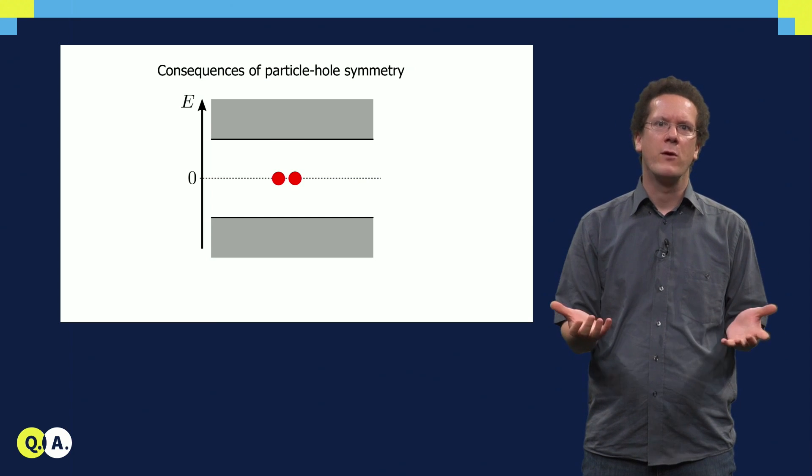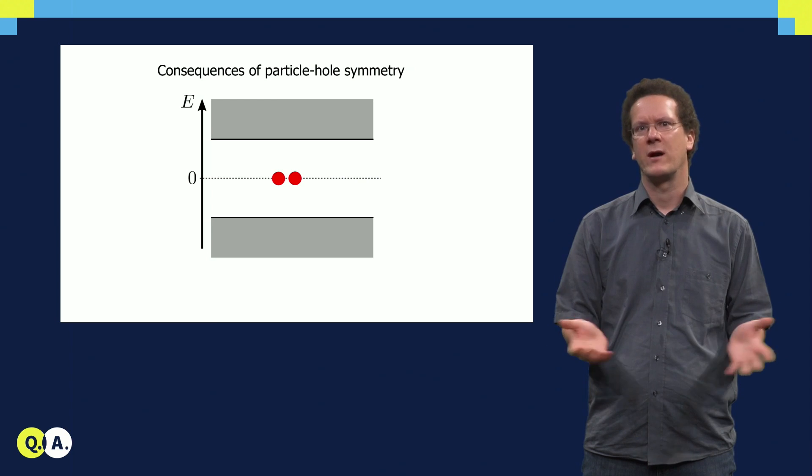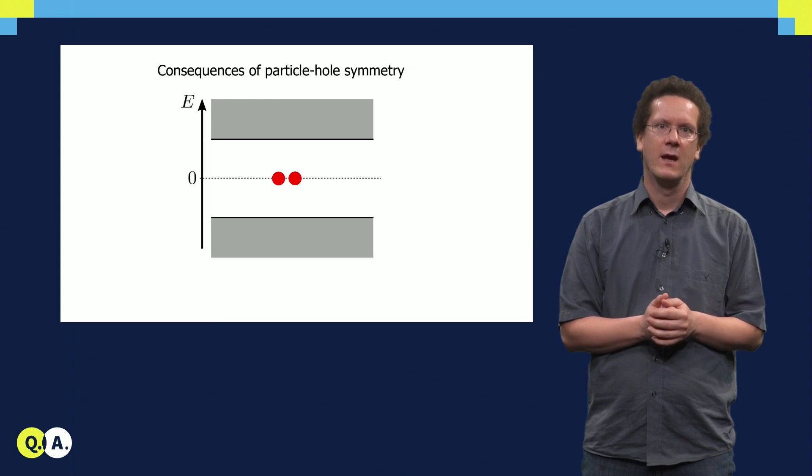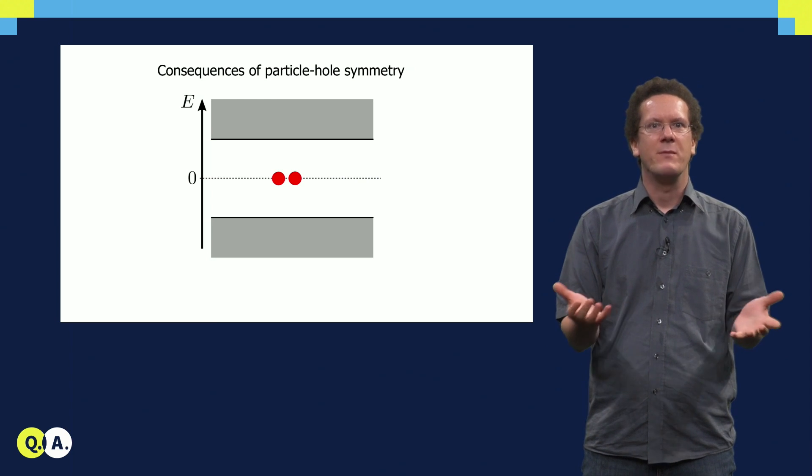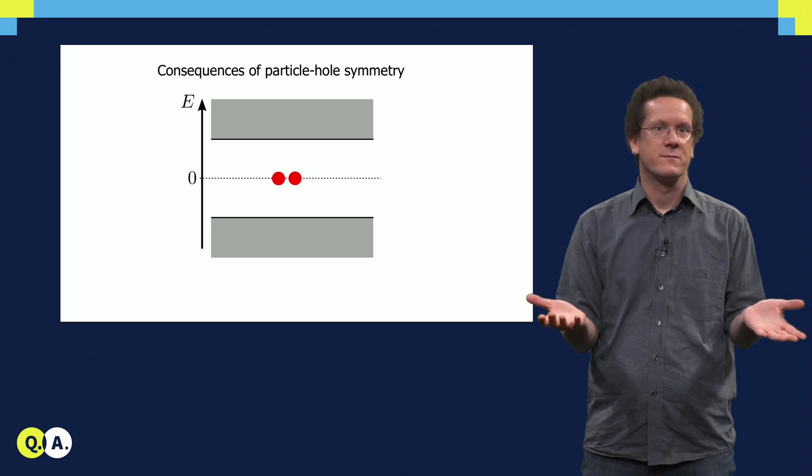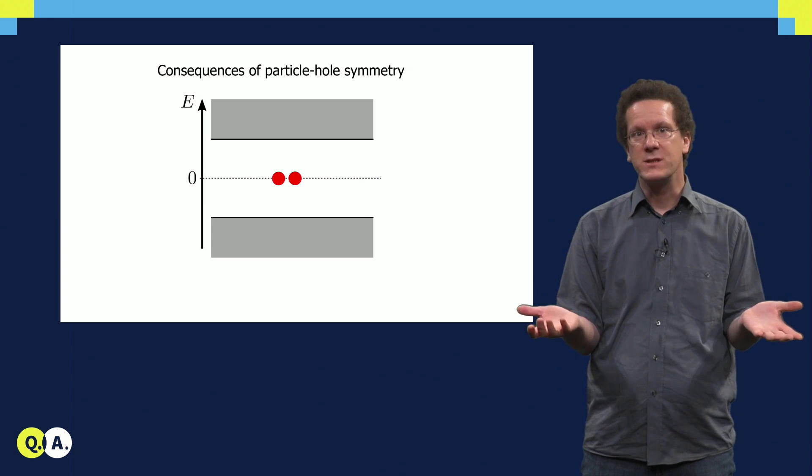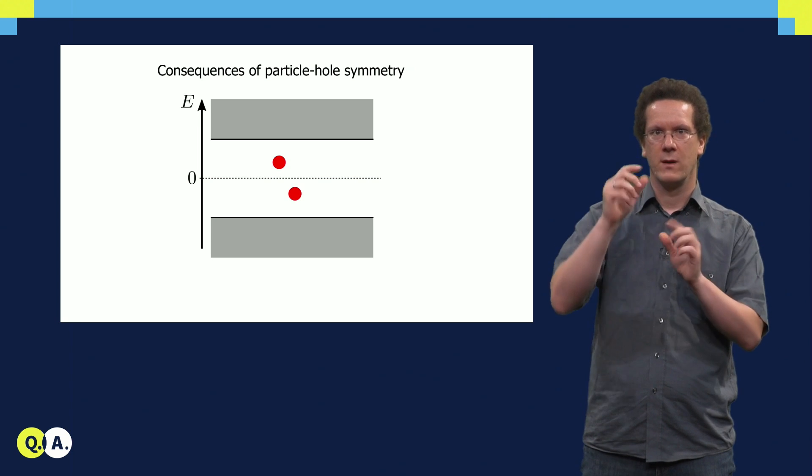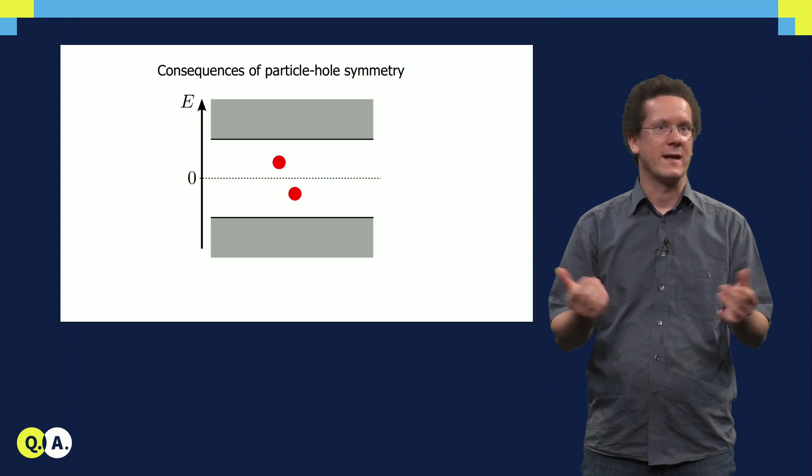I told you before, in real condensed matter systems Majorana bound states always come in pairs. Any normal fermionic state can be described with two Majorana states. In this case a perturbation can actually move them symmetrically in the spectrum. So that of course is not protected.